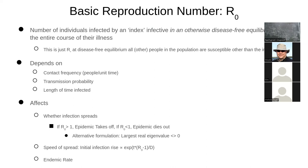The basic reproductive number is the number of people an infective will infect before they recover. If R0 is less than one, they won't infect more people than there are. By the time they recover, chances are they haven't even replaced themselves. Many people who have it won't infect anyone to take their place when they recover, so it will tend to die out.